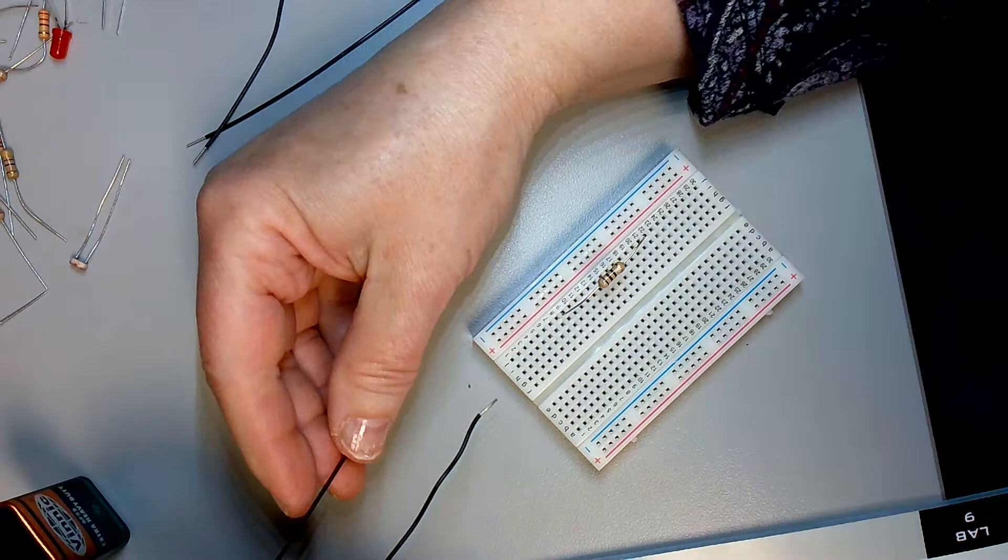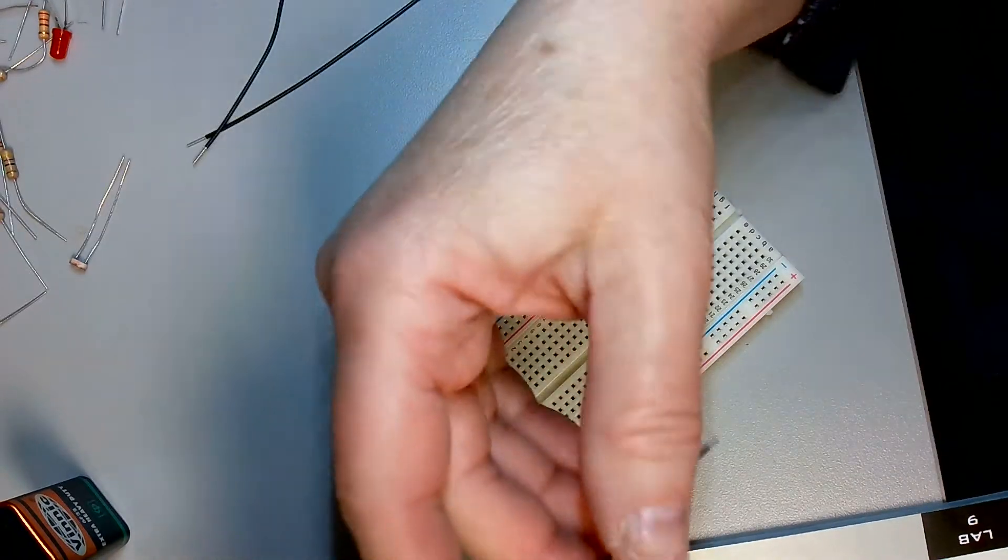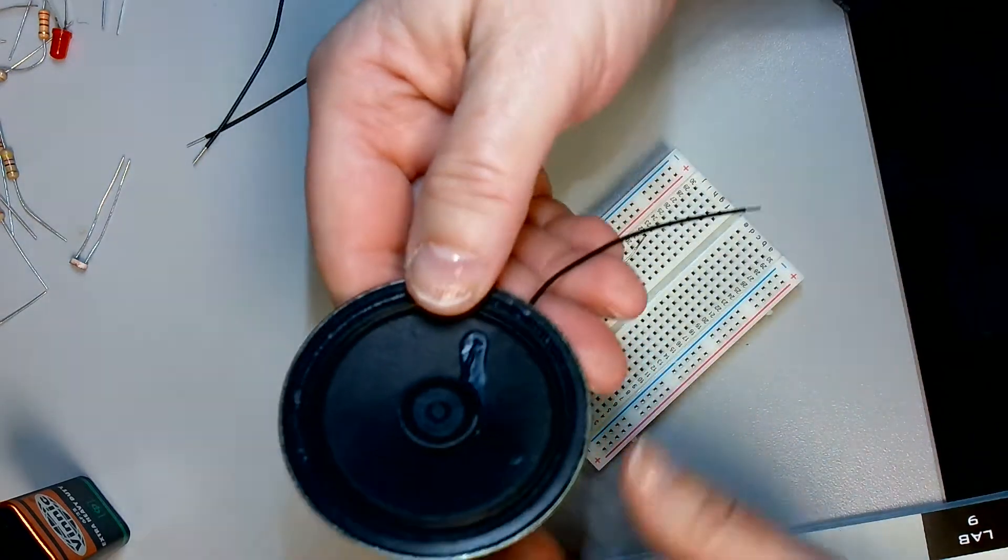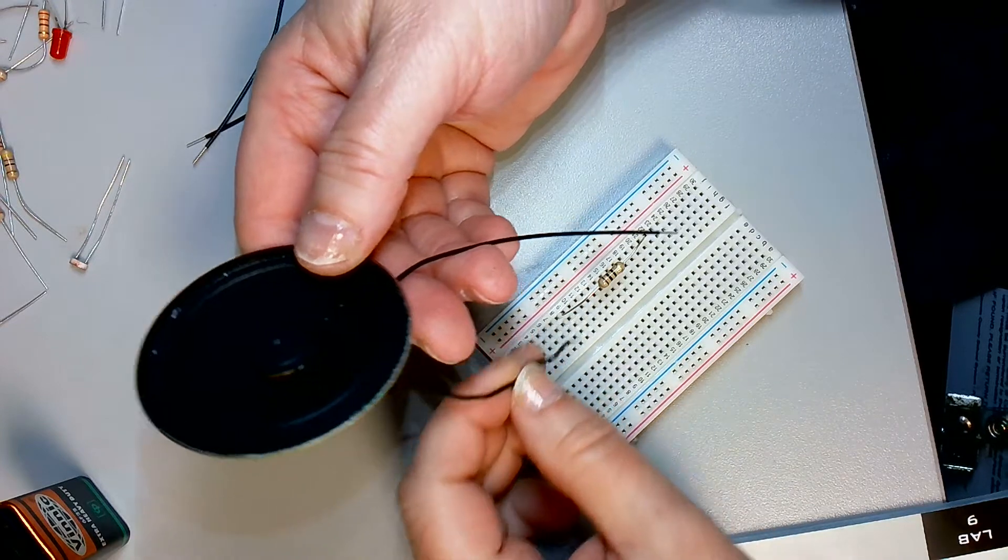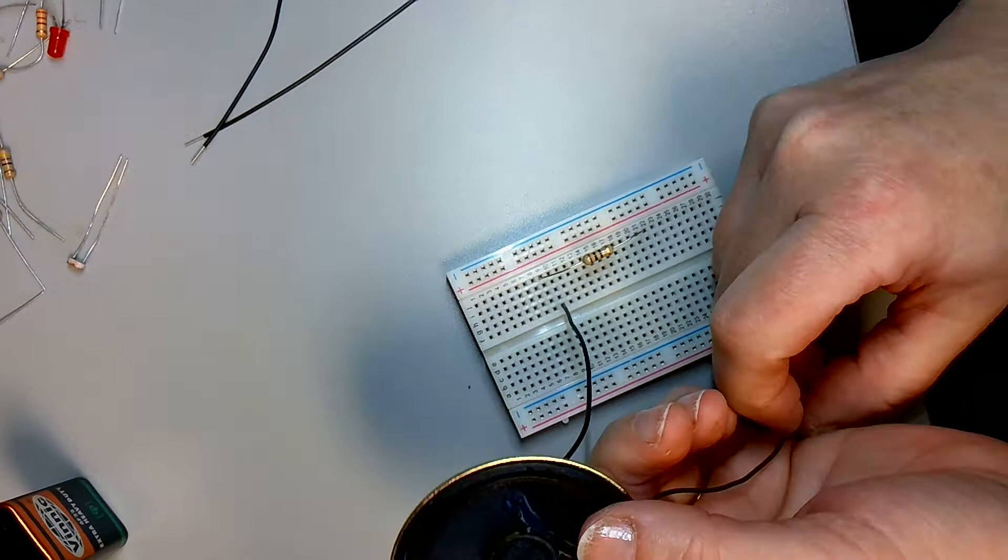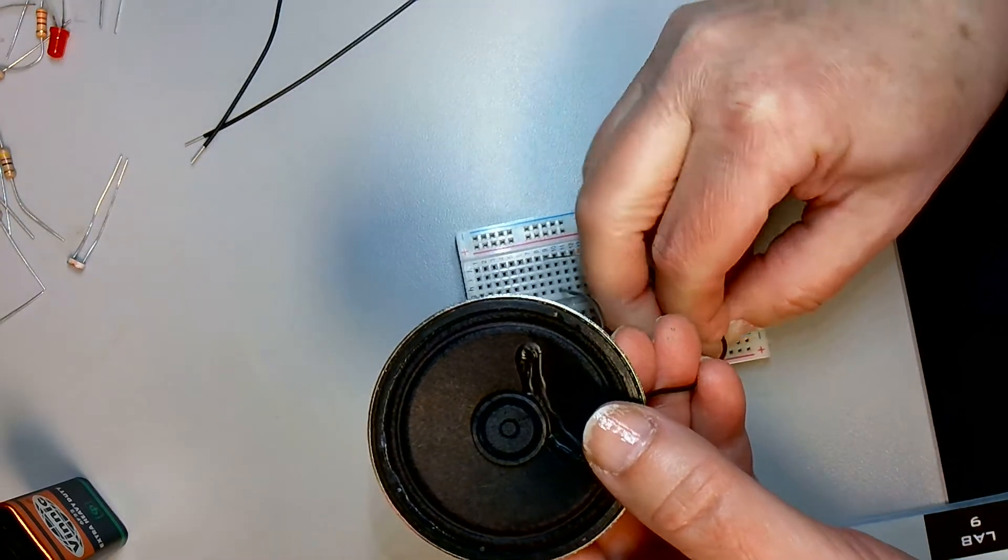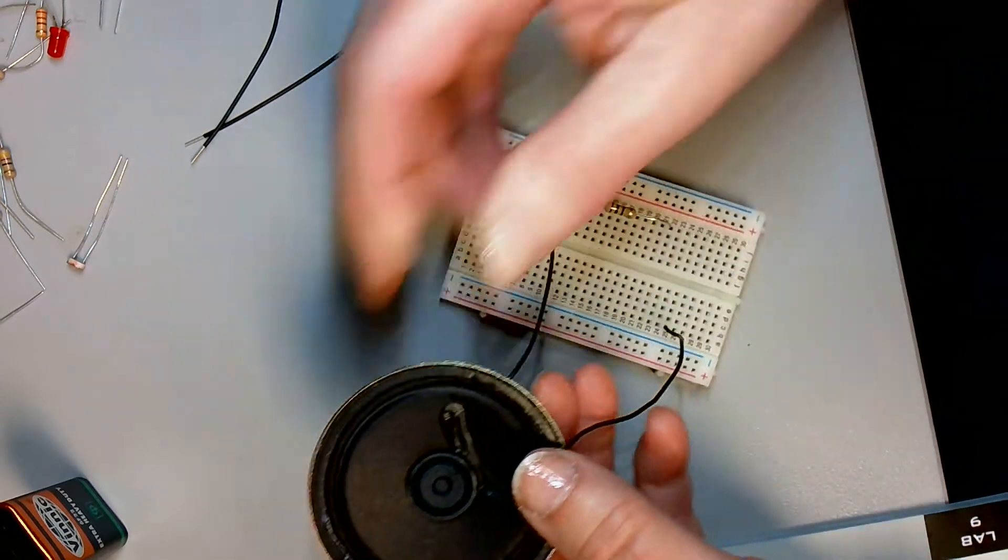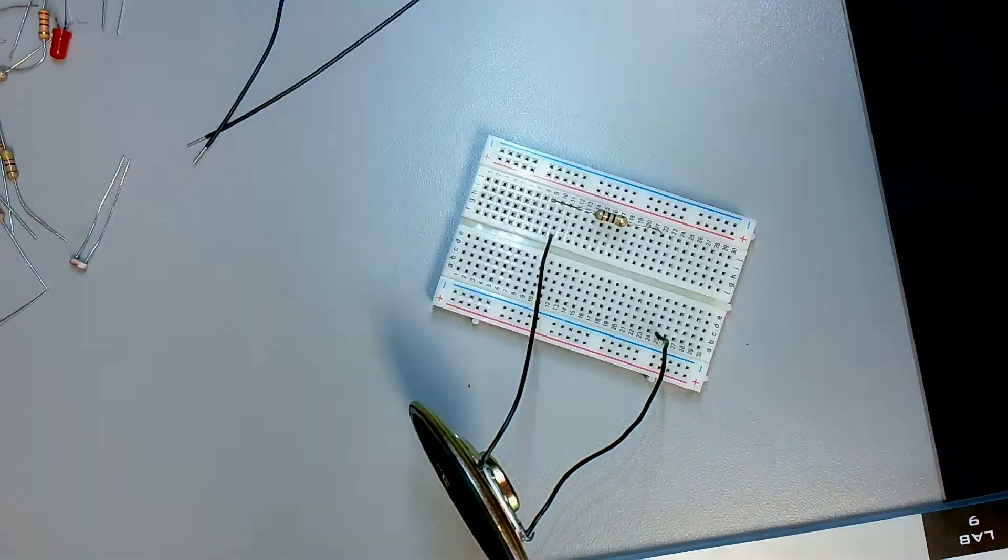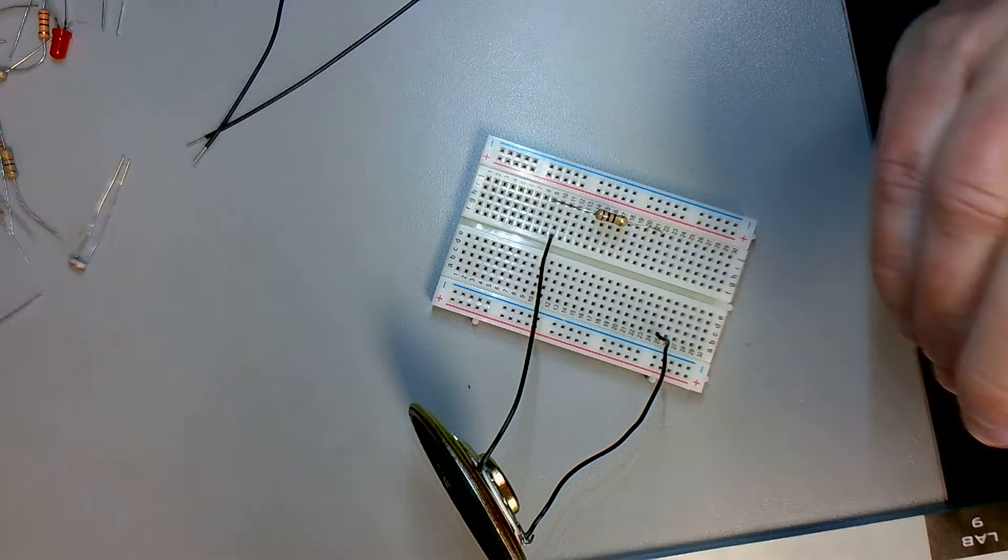Our two wires. And we're going to put one end of the speaker into 9F. So, 9F. Okay. And then we're going to put the other end of the speaker into 25A. 25A. So there's the speaker, and it's just kind of hanging out. And then we're going to put in our battery.